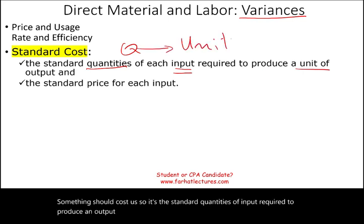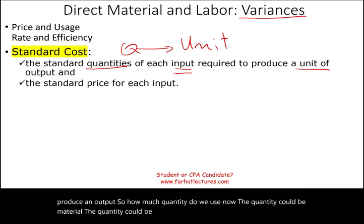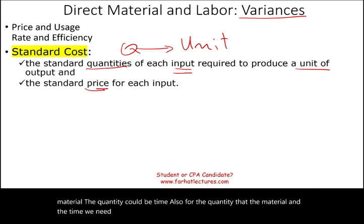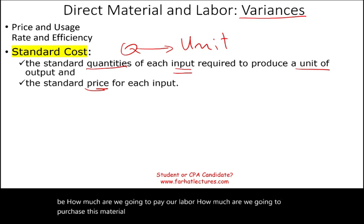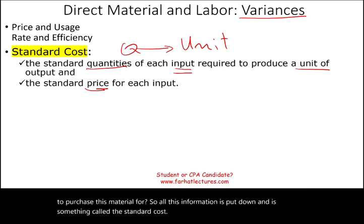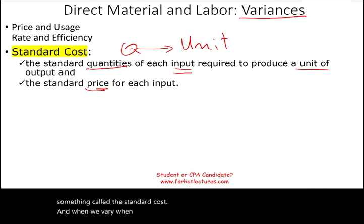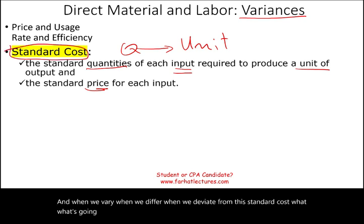Standard cost represents the standard quantities of input required to produce an output. The quantity could be material or time, and for both we need to pay a price. We should know what the price is going to be — how much we're going to pay our labor, how much we're going to purchase this material for. All this information is put down in the standard cost. When we deviate from this standard cost, we're going to have variances, and this is what we need to study.